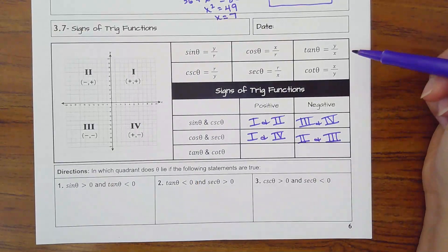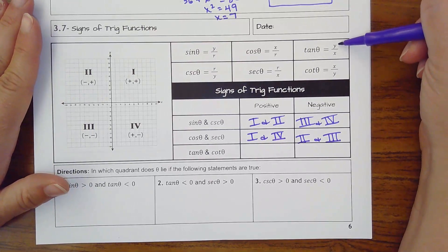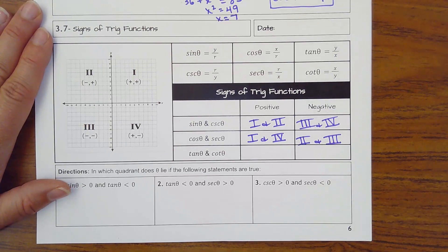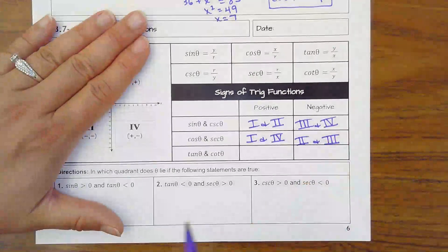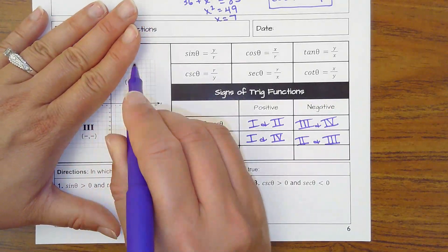And then tangent actually deals with slope. Remember, slope is change in y over change in x. That's kind of what I think about. But also I know I'm not doing anything with the radius or the hypotenuse. So where is slope positive if my line was going like this? So it goes through quadrants 3 and 1.